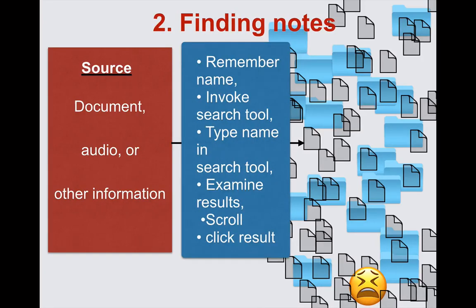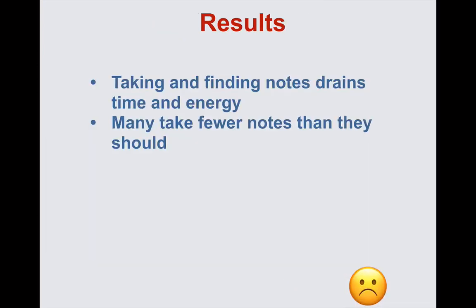Even if you use an app like Apple Notes that automatically saves notes, to be able to use your notes later, you need to find them. But searching for notes is not easy. You need to remember the note's name, call up the search tool, type the search query, examine the search results, scroll, and double-click the search results. So searching takes you out of the zone — it drains time and cognitive energy. Given how often you need to access information these days, this saps your cognitive productivity.